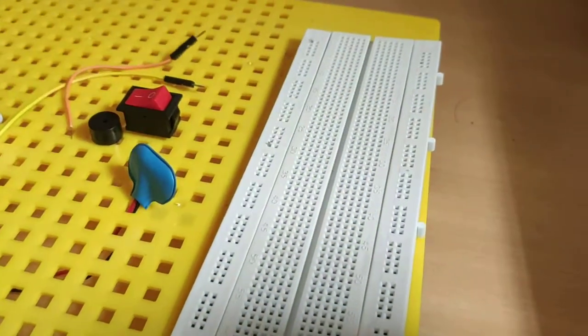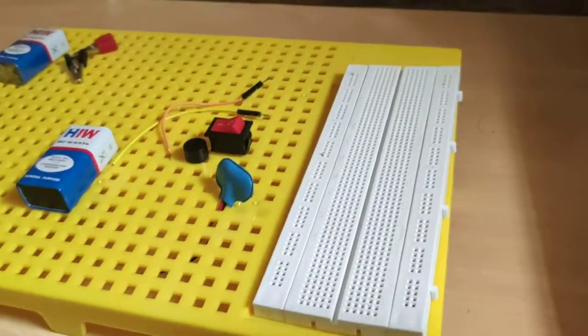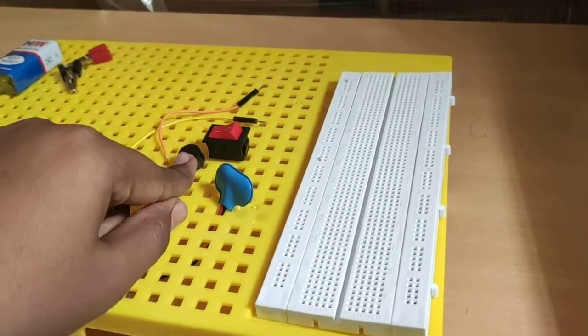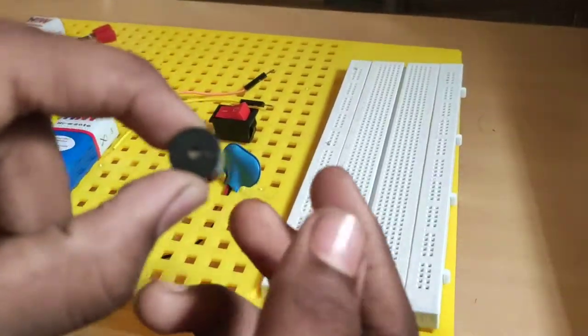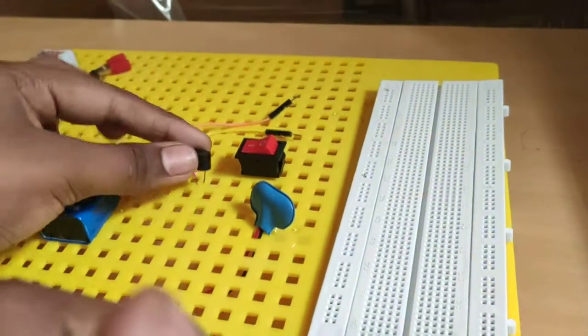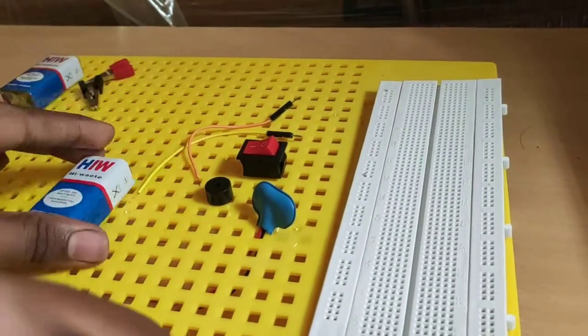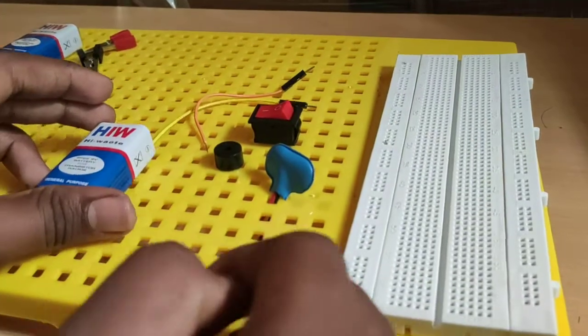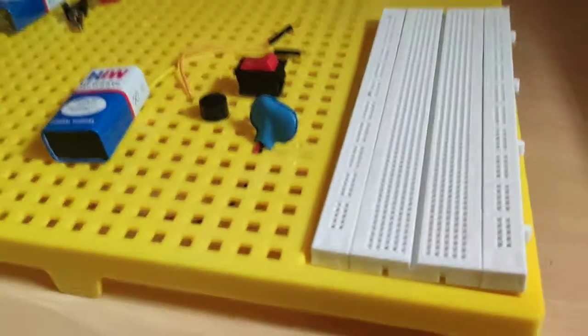We need a battery connector, we need a buzzer. This is the buzzer. This buzzer needs a positive side and negative side, and a 9 volt battery and 9 volt battery connector. So let's get started.